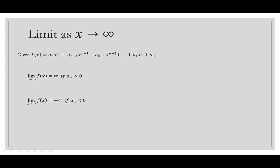The limit as x goes to infinity for a polynomial function is found by looking at the leading term and its leading coefficient. When a_n is positive, the limit as x goes to infinity is positive infinity. When a_n is negative, the limit as x goes to infinity is negative infinity. So positives go up, negatives go down.